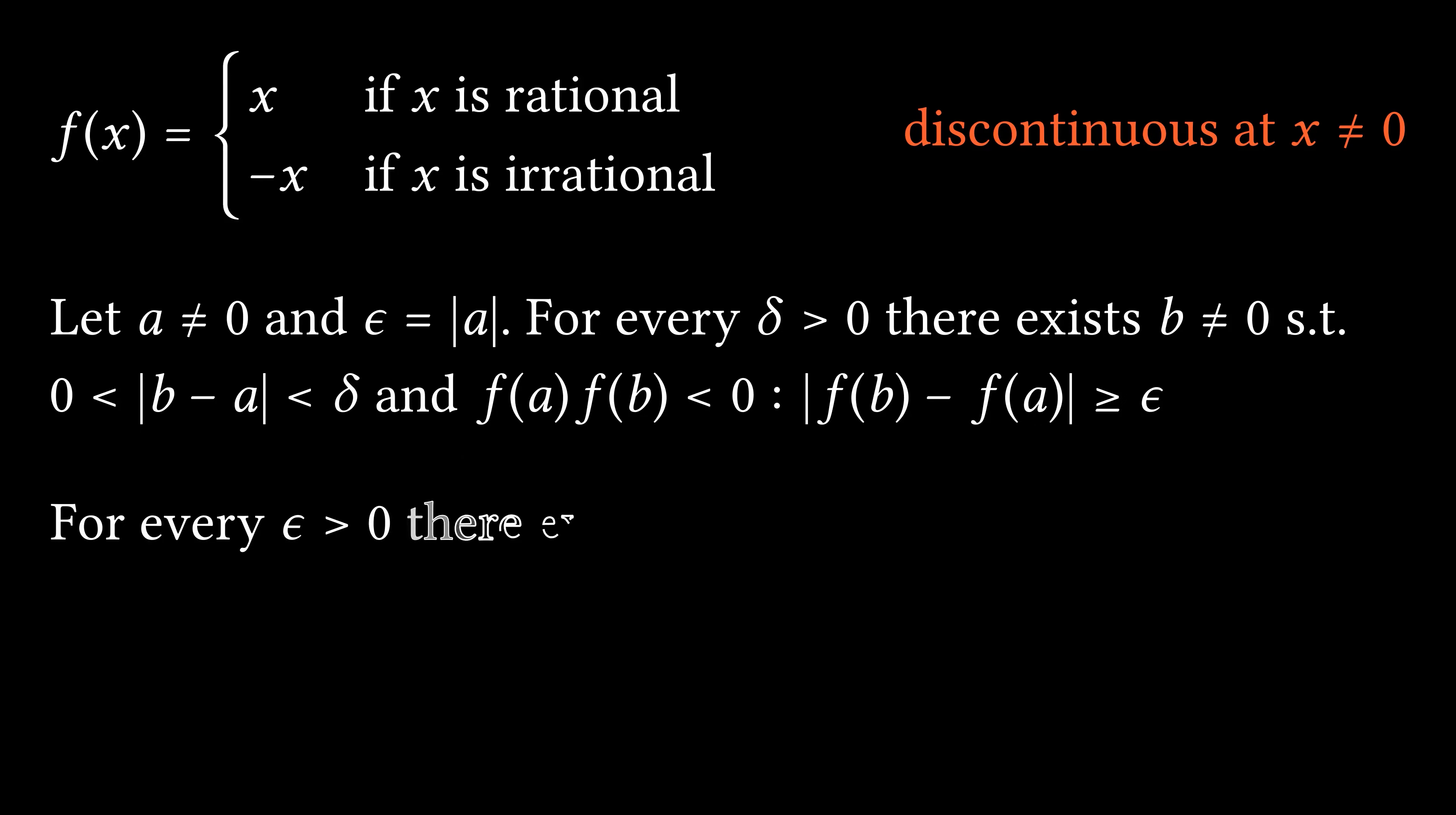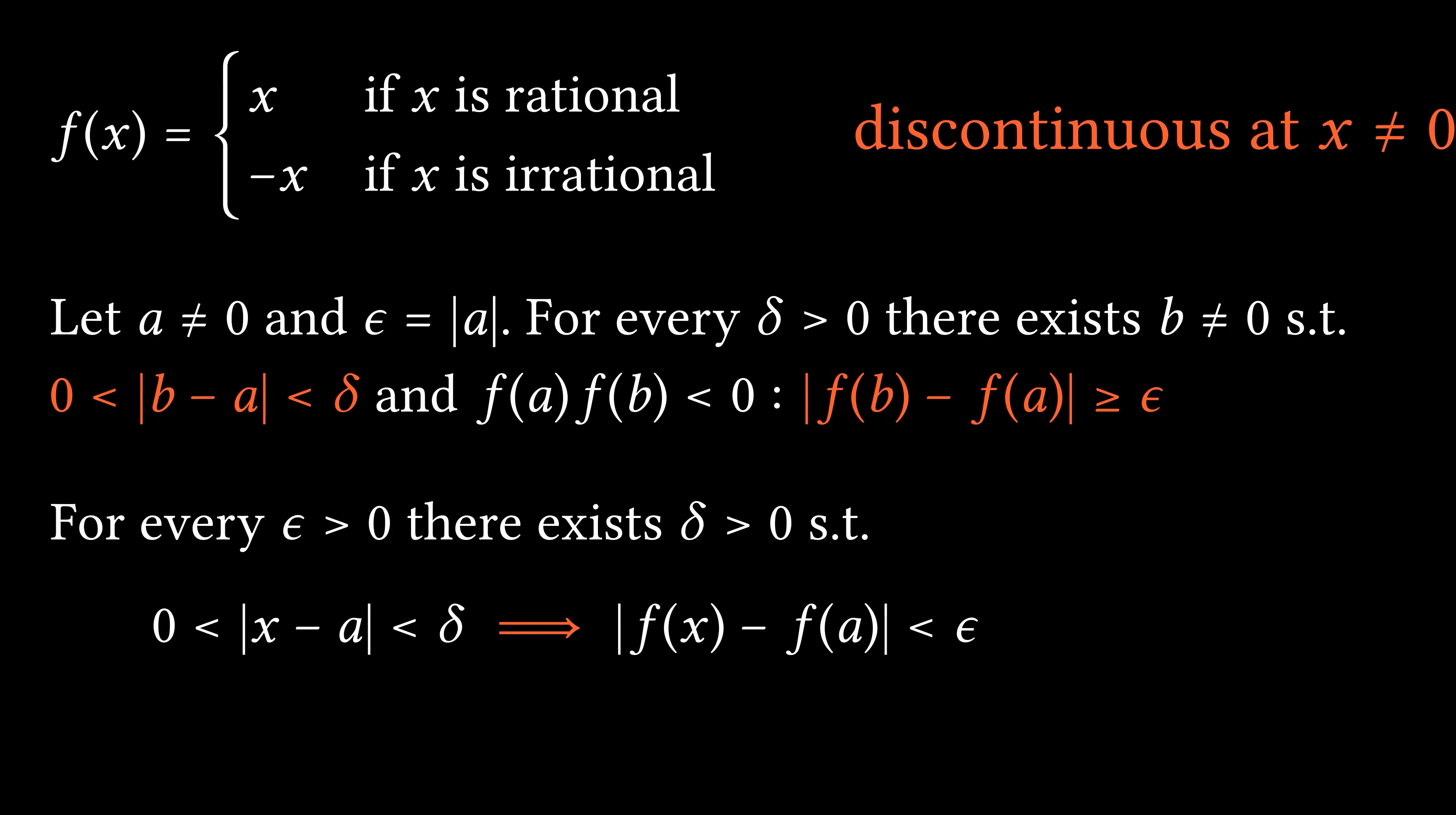It follows that the statement saying the function f is continuous at A fails, because we've shown there exists an epsilon such that for every delta the implication breaks down. This computation proves that the function is indeed discontinuous at all non-zero numbers.